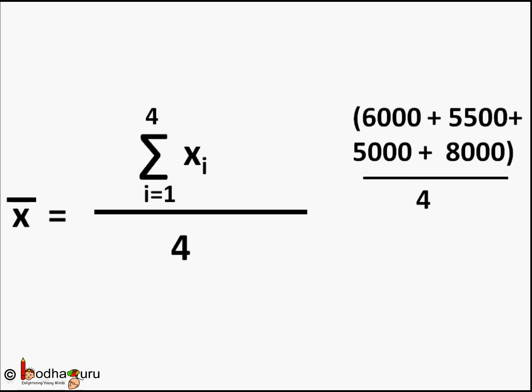As we have seen in the earlier video, the mean of n observations is sum of n observations divided by number of observations. So from the table we sum the salaries like 6000 plus 5500 plus 5000 plus 8000 and divide by 4. This will give us Rs. 6125 as the average salary.